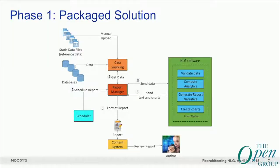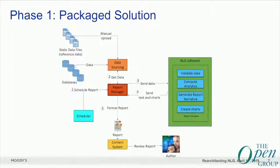This was our first architecture. We had a scheduler that essentially triggered our system once in a while to see if new data were available. The report manager would then contact the data sourcing software to retrieve data from our sources and from manually uploaded files, and then sent this data to our natural language generation software. It was very monolithic and had different components inside — to compute analytics, generate reports, create charts, and validate data. Once paragraphs were produced, they were sent back to the report manager to be assembled and sent to our content management system to be reviewed.